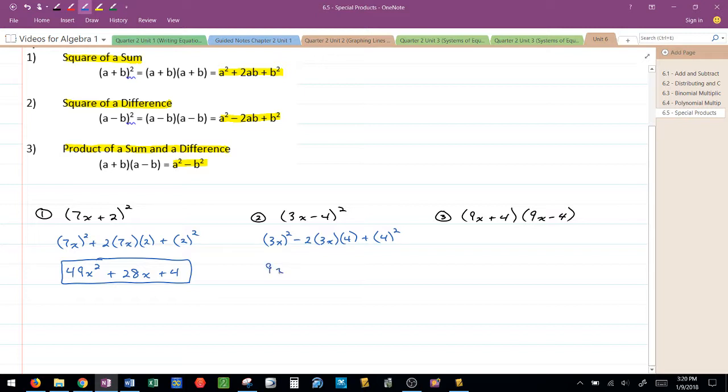3x squared would be 9x², minus 6 times 4, minus 24x plus 16.